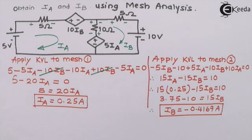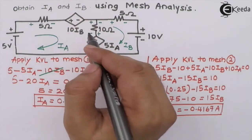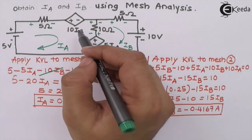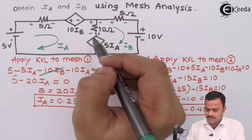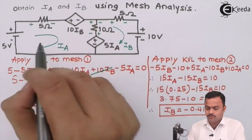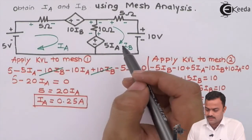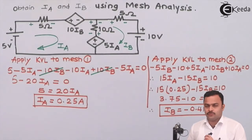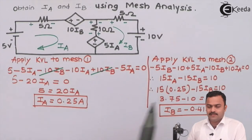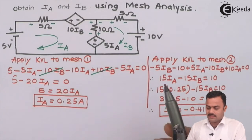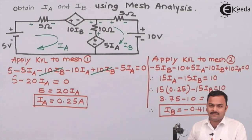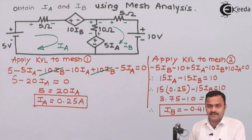Luckily, in this problem, though dependent sources are given, the values on which the sources depend are our own loop currents Ia and Ib. Hence there is no need to write any extra substitution equation. We can simply write the KVL equations and after solving we get the answers for Ia and Ib directly. Thank you.